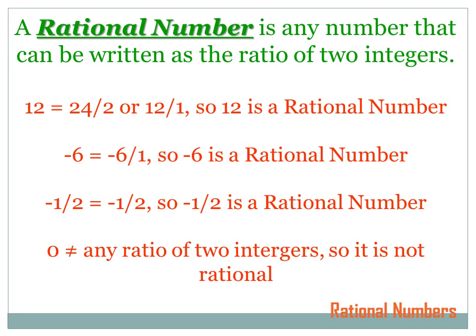A rational number, then, is any number that can be written as a ratio of two integers. For instance, 12 is a rational number because I can write it as the ratio of 24 to 2, or 12 to 1. Minus 6 is also a rational number — I can rewrite that as minus 6 to 1. Minus 1 half is a rational number because I can write it as minus 1 over 2. 0, however, is not a rational number, because I cannot create a ratio of any two integers that would equal 0.